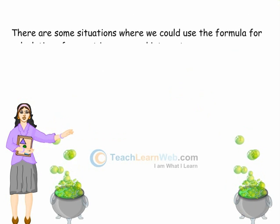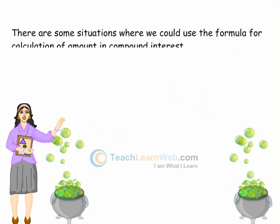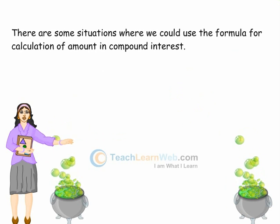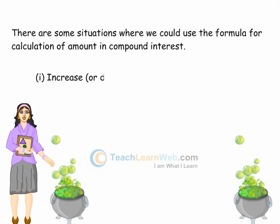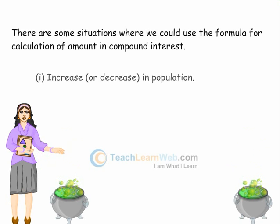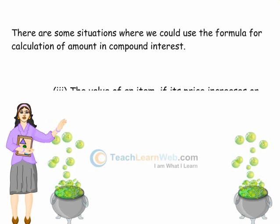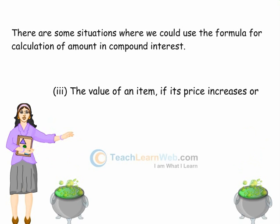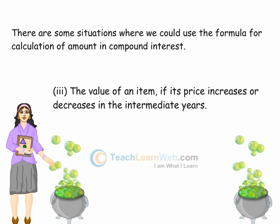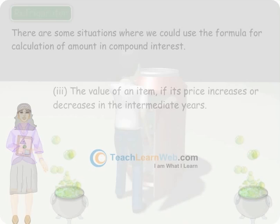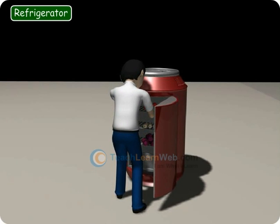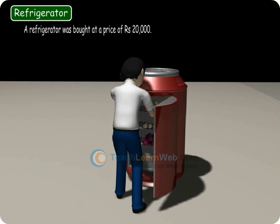There are some situations where we could use the formula for calculation of amount in compound interest. Here are a few: increase or decrease in population, the growth of bacteria if the rate of growth is known, and the value of an item if its price increases or decreases in the intermediate years.